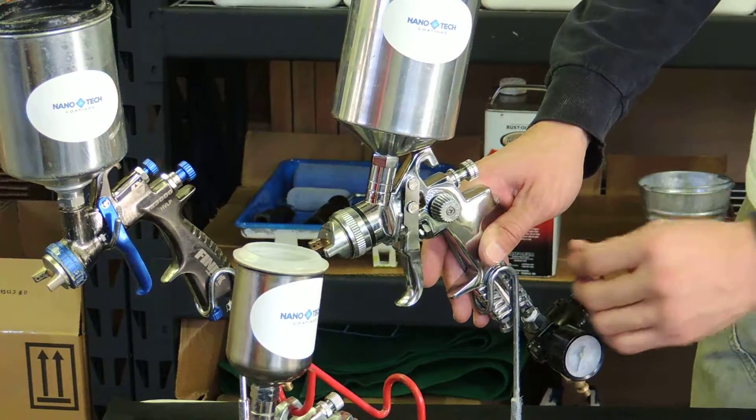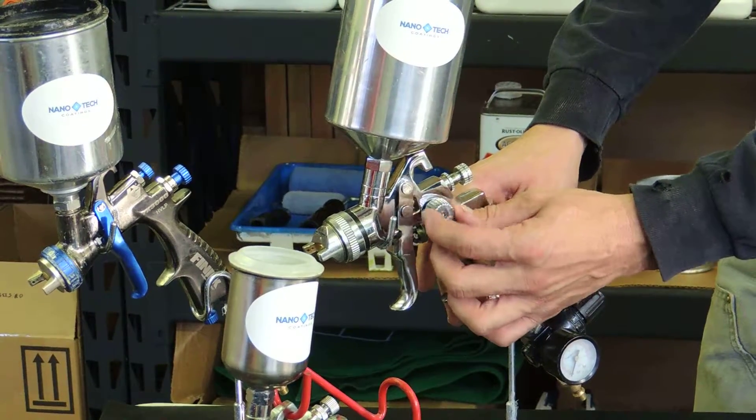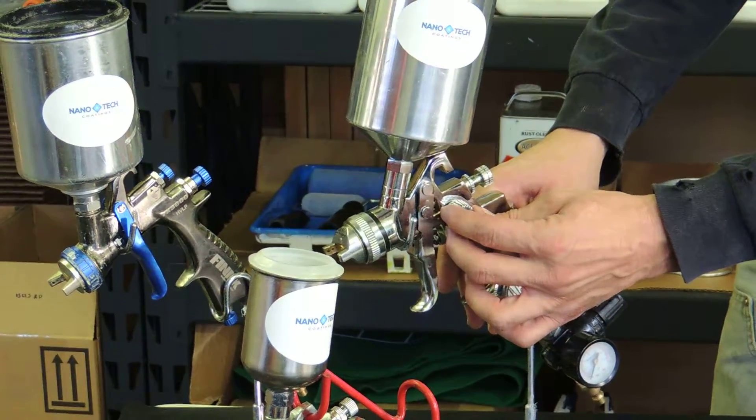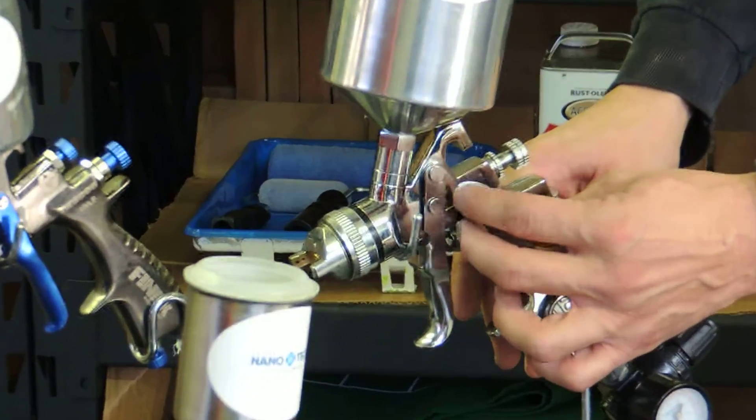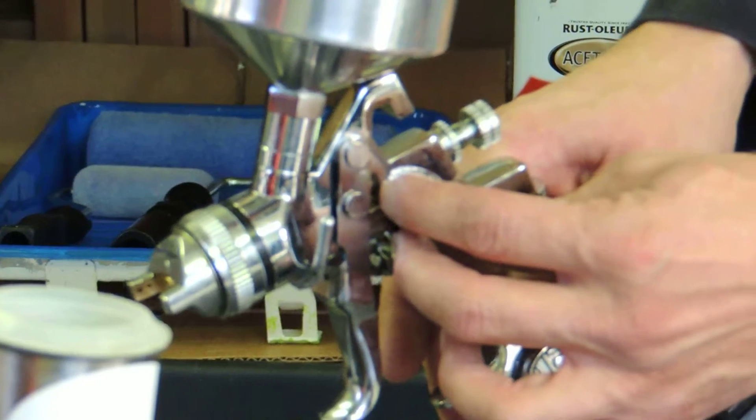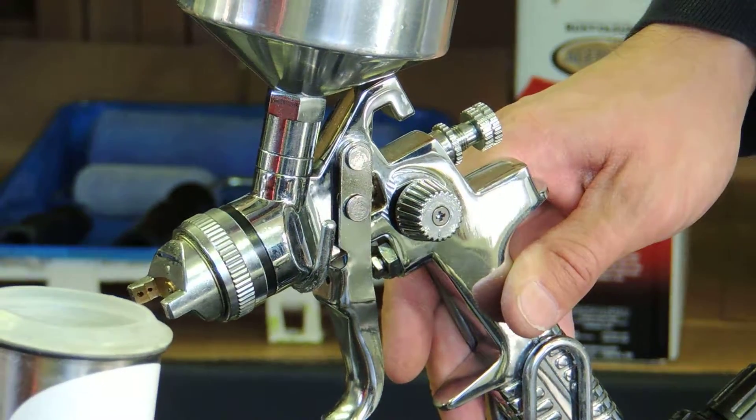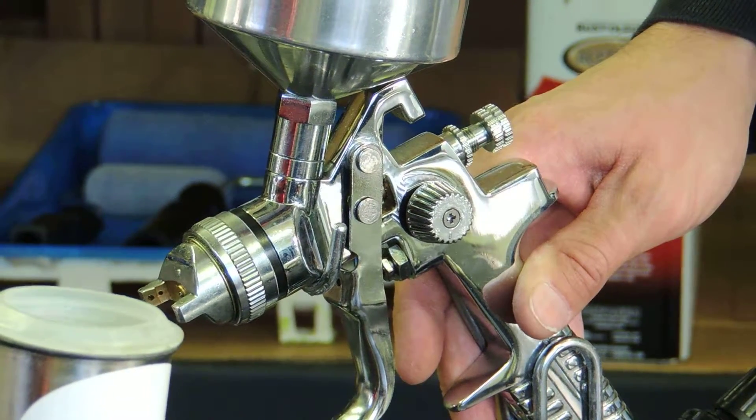This knob on the side of the gun is the pattern adjustment knob, or fan adjustment knob. You can adjust it from a round spray pattern to where it fans out.